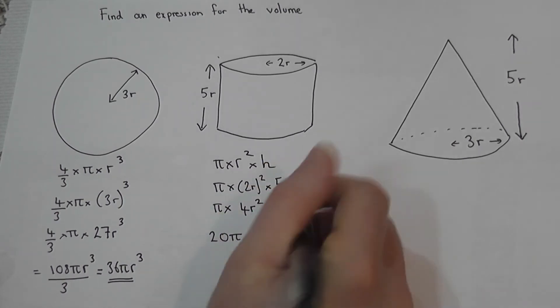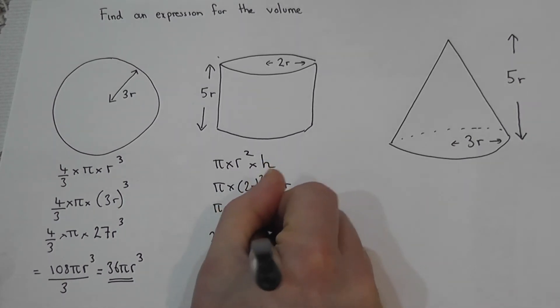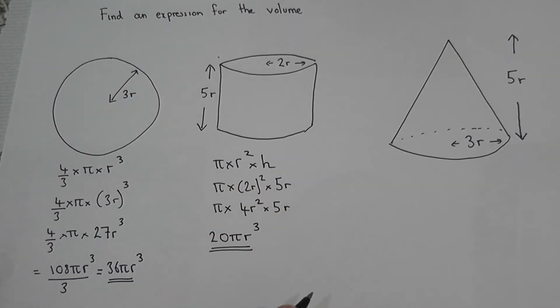And r squared times r is r cubed. So a simplified form for the expression of this cylinder is 20 pi times by r cubed.